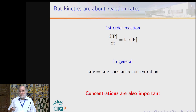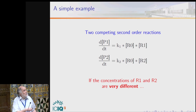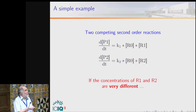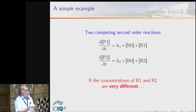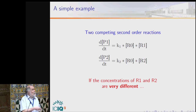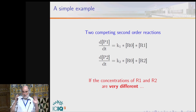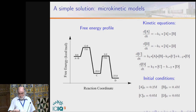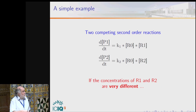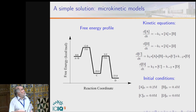Only in a zero-order reaction will the rate not depend on concentration, and zero-order reactions are not the general case. Some examples of how concentrations are important: imagine a reactant R0 that can react with R1 to produce P1, or with R2 to produce P2. The rate depends on both rate constants and the concentrations of the reactants. If the concentrations of R1 and R2 are very different, the reaction rates may not follow the same trend as the rate constants. Luckily, it's easy to introduce them using microkinetic models.